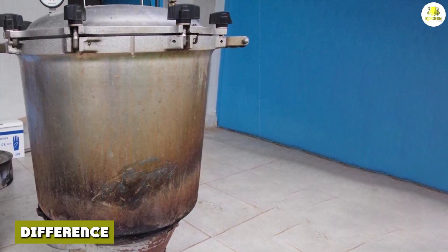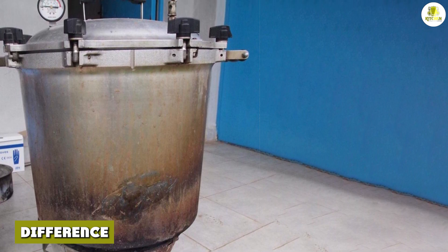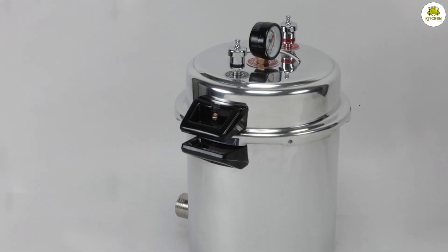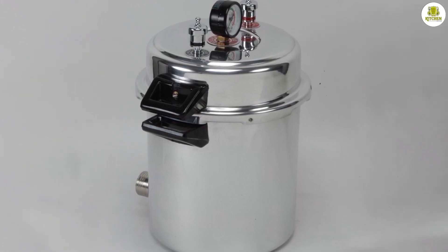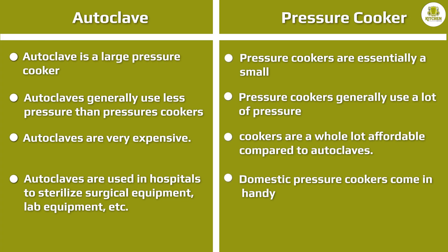For sterilization of liquid substances, wet or steam sterilization employing either an autoclave or domestic pressure cooker can be used with the precaution of the slow exhaust. Pressure cookers are basically large saucepans designed to cook food very quickly using steam under pressure.